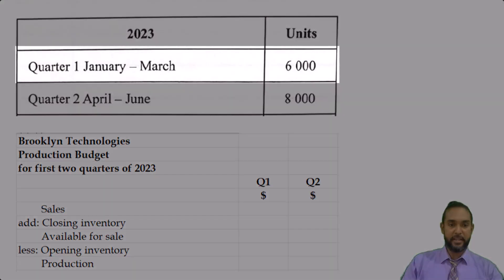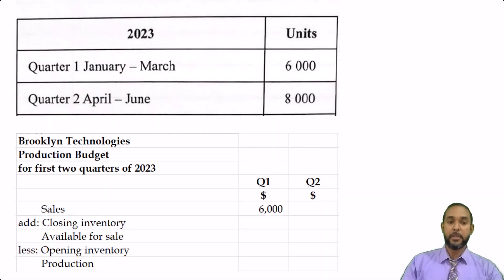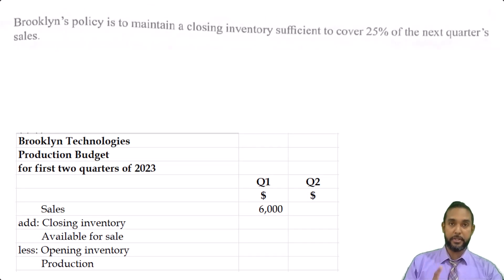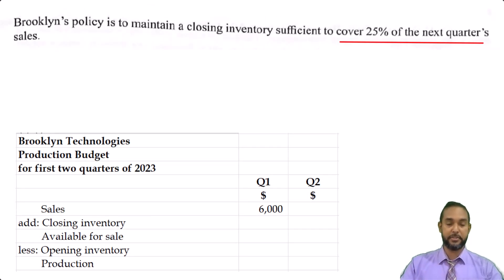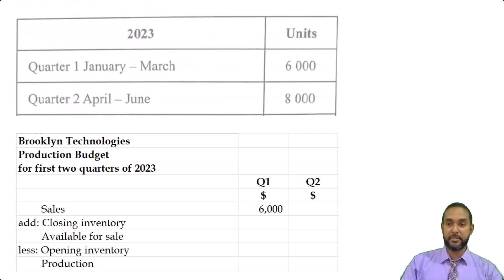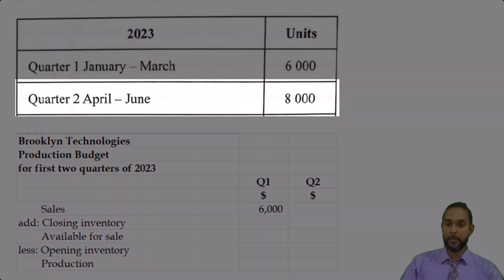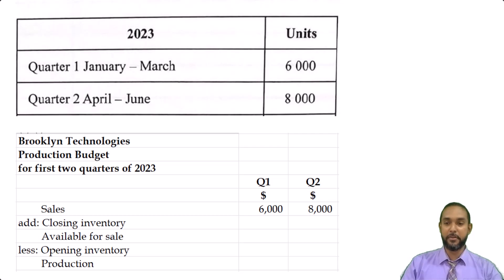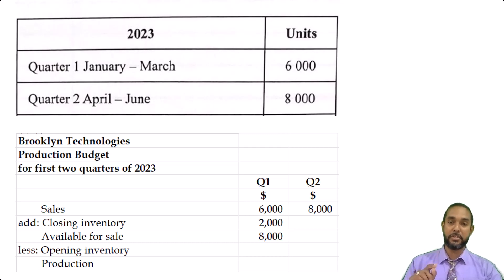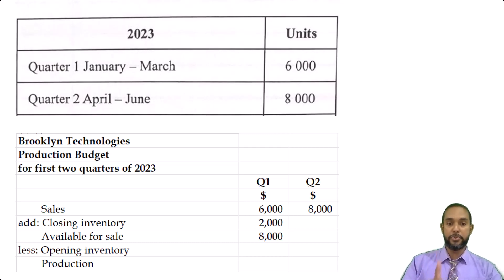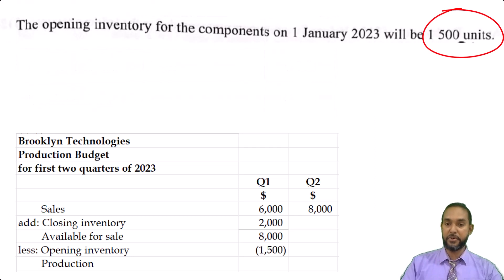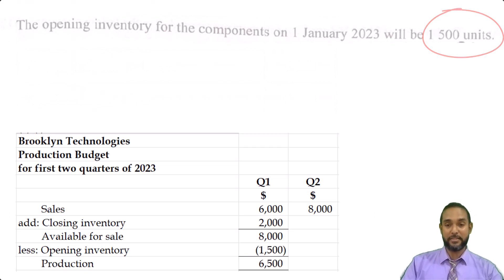Sales in quarter one is 6,000 as per the question. Now, the closing inventory is 25% of next quarter's sales. Next quarter's sales is 8,000, and 25% of 8,000 is 2,000. So 6,000 plus 2,000 is 8,000 — we need to have 8,000 units available for sale in quarter one. We plan to sell six and keep two for closing stock. Now, we do start the year with 1,500 units on hand, which means we only have to produce 6,500.